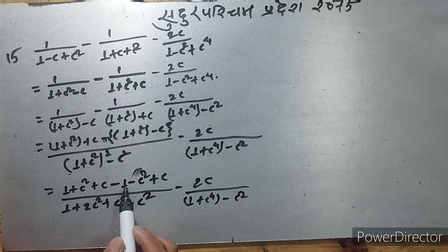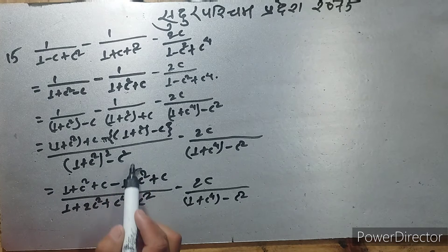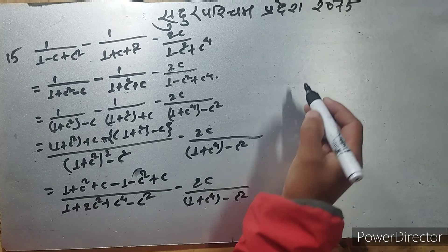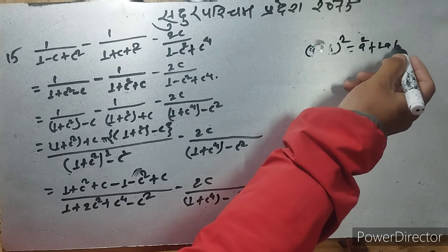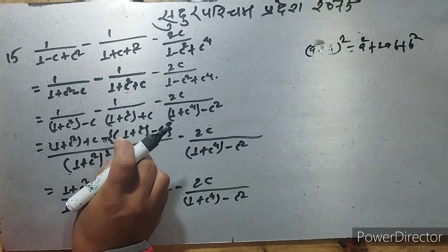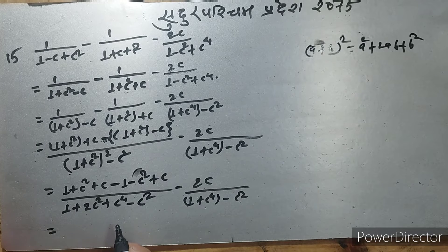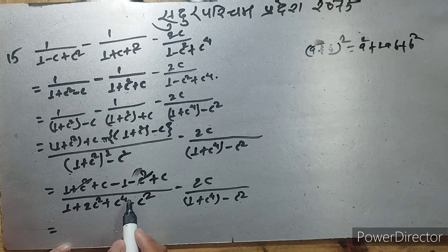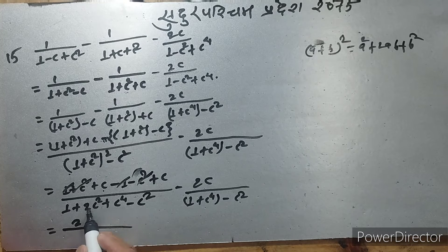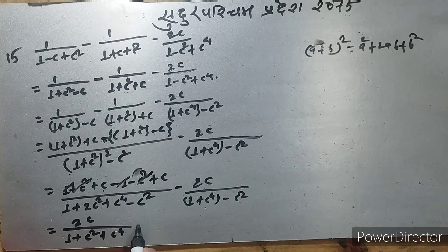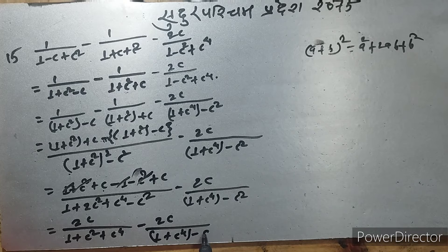Opening brackets one by one, multiply out: minus gives plus, minus gives minus. Opening the bracket format — applying the (a plus b) whole square formula: a square plus 2ab plus b square. So we get: c square plus c square minus 1, plus 1. Then 1c, 2c upon — so c square minus 1, that is 1 plus c square. You get 1 plus c square, and also minus 2c upon 1 plus c to the power 4, minus c to the power 2.